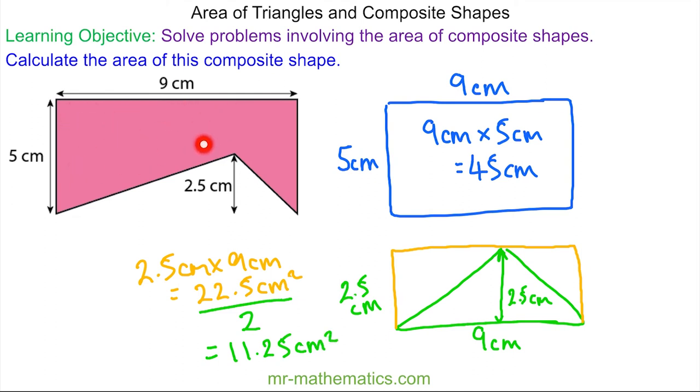Finally, to work out the area of this composite shape, we'll have the rectangle which is 45 centimeters squared, take away the area of the triangle which is 11.25 centimeters squared. This gives us a total area of 33.75 centimeters squared.